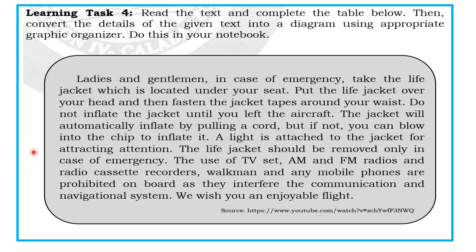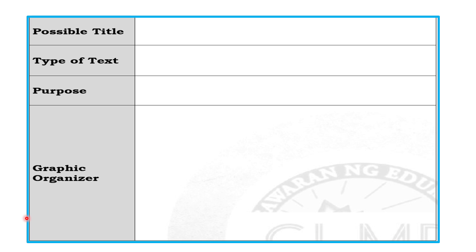For Day 2, Learning Task 4: Read the text and complete the table, then convert the details of the given text into a diagram using the graphic organizer. The text is about emergency instructions — ladies and gentlemen, in case of emergency, take the life jacket. You will answer: what would be the possible title of the text, the type of text, the purpose, and then complete the graphic organizer.